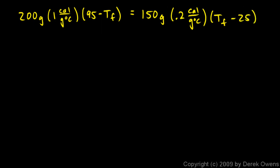Now I can simplify this. Calories per gram degree Celsius on both sides cancel out, and so do the grams. The units all cancel, which allows me to not worry about them and continue with the algebra.